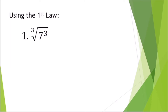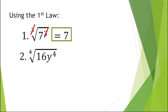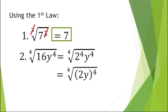Using the first law, for example, cube root of seven cubed equals seven, since the index equals the exponent — just cancel them and remove the radical symbol. For another example, fourth root of sixteen y raised to the fourth: change sixteen to its exponential form, so we have fourth root of two raised to the fourth times y raised to the fourth. Since two and y have the same exponent, simplify.